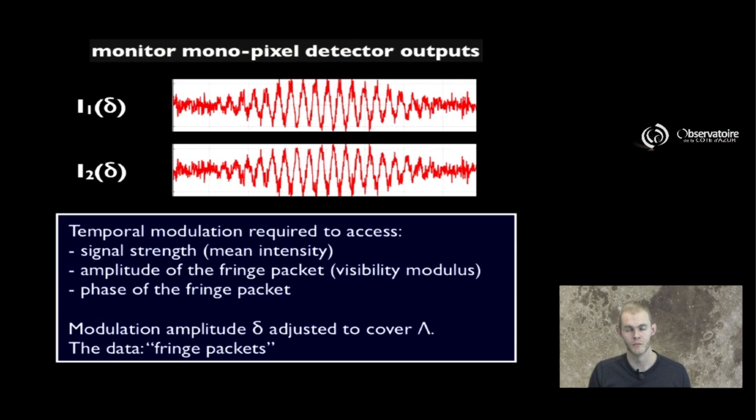Now, the temporal modulation gives you access to several numbers. The first one is simply the overall strength of the signal. If you compute the total amount of light you receive on both outputs at any given time, you are able to somehow get access to how bright your target is, which is interesting. But the more interesting bits come from measuring the amplitude of the modulation, which is something you're going to be able to relate to the visibility modulus, and the other thing is going to be the phase of the fringes. That is the relative location of the successive minima and maxima of your fringes in comparison to this overall envelope function that you see on the screen here.